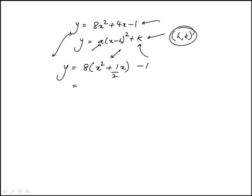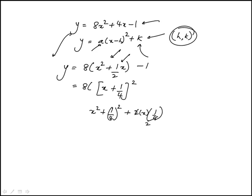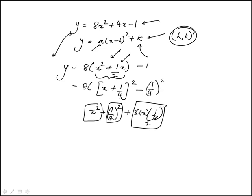Then I need to complete the square here. So this would be x plus one-fourth, squared — because if I square that, it would be x squared plus one-fourth squared plus twice their product, and that essentially gives us the x over 2 term. So if I subtract one-fourth squared from that, this piece is exactly identical.